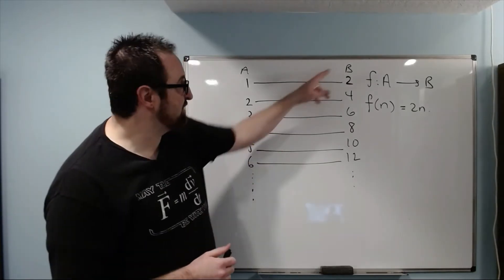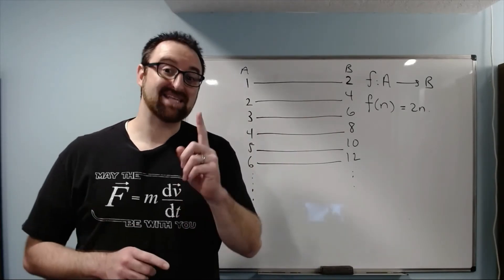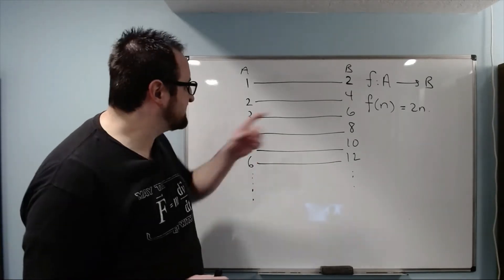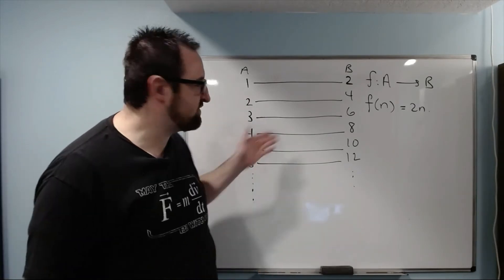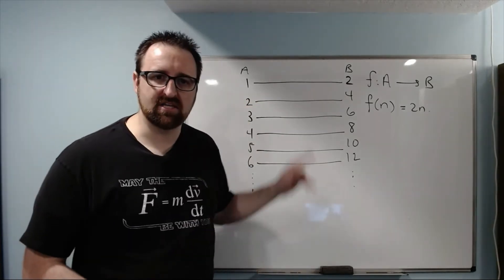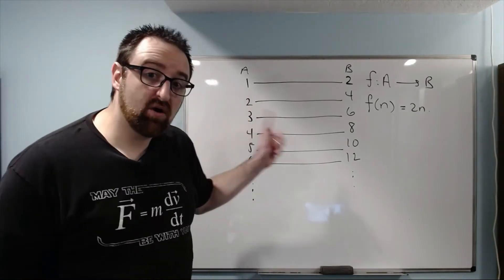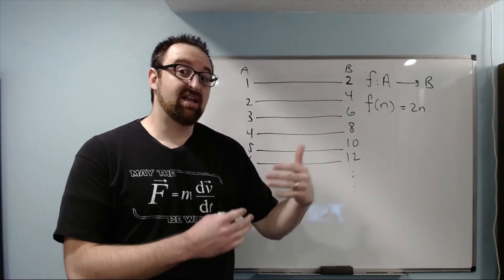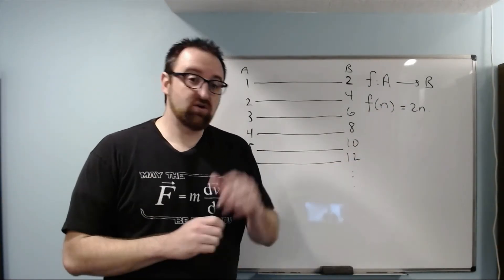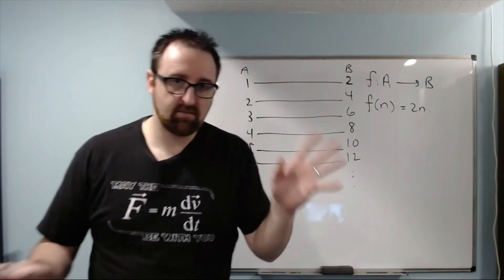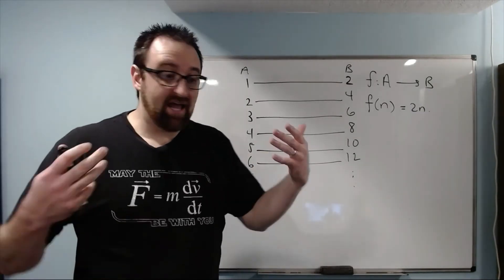That means there are exactly as many numbers in the counting numbers as there are in the even numbers, because we've paired them all up — nobody got left out, everybody got exactly one date. Now, that should be kind of bothersome because the even numbers are a proper subset — all those elements occur in the counting numbers, and there are more counting numbers. And yet I was still able to put them into a one-to-one correspondence. That's actually what mathematicians define as the property of infinity: a set is infinite if you can find a one-to-one correspondence between it and a proper subset of itself.